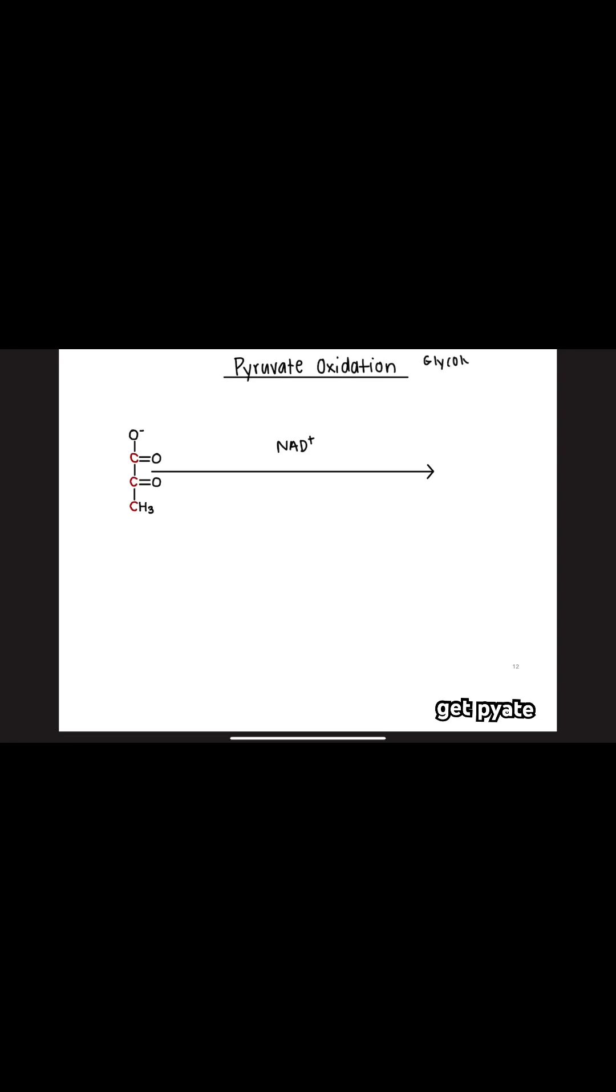So, we get pyruvate from glycolysis, which breaks down a glucose molecule into two pyruvate molecules. But what happens next?